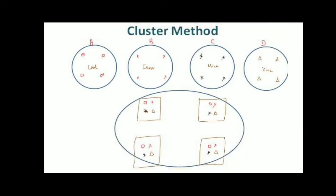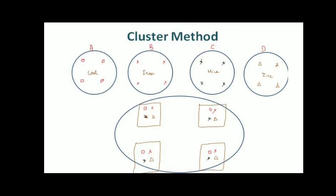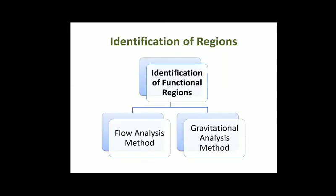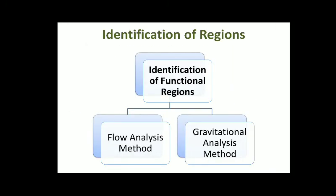In the cluster method, when we have minerals like coal, zinc, mica, iron, and zinc, then we have a particular cluster. A cluster means a particular piece of region which has homogeneous characteristics. For example, if in the first region we find coal, iron, mica, and zinc, and in the second region we also find coal, iron, mica, and zinc, then this region is a cluster region identified by the cluster method.